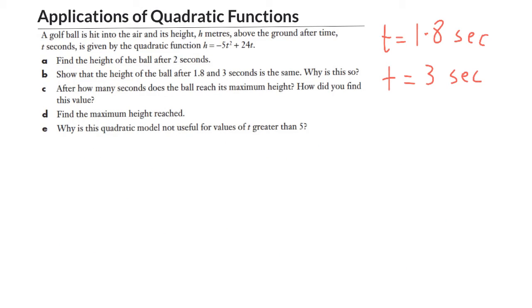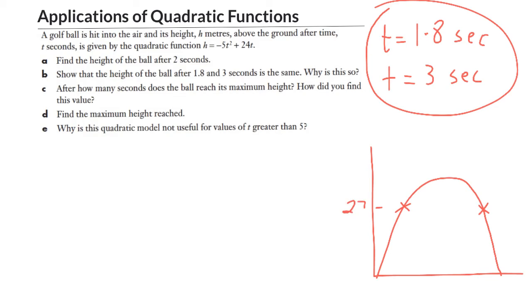For part c, we want to find the time, or after how many seconds the ball reaches maximum height, and how we're going to find this value. So I've written here these two values from part b. And it's no coincidence that you're told those two values that produce the same height. Because what we can do with a quadratic is we take any two values, any two x values, and these are x values. Remember, this is what our curve looks like. And these two values are here and here, approximately. They produce that height of 27 meters.